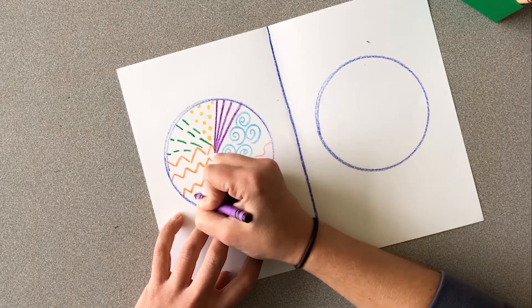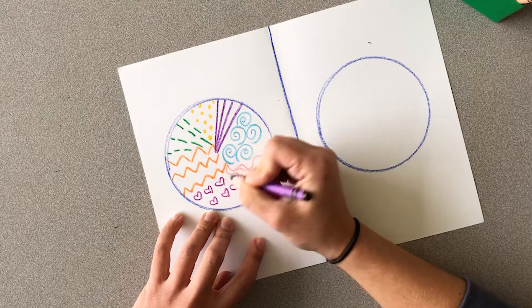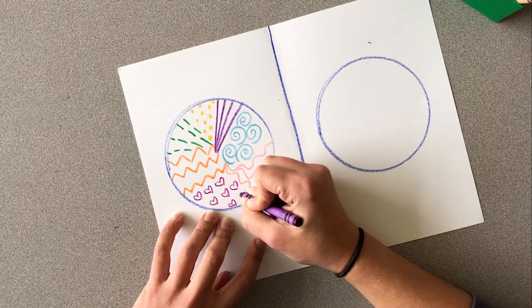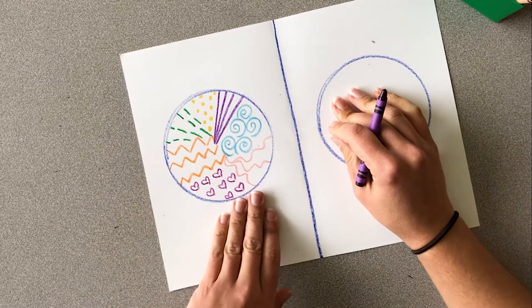I want to fill this in with little heart shapes, maybe making heart lines, lines or stripes of hearts. You can do whatever kind of shapes or lines you want to, but fill up this whole entire circle.